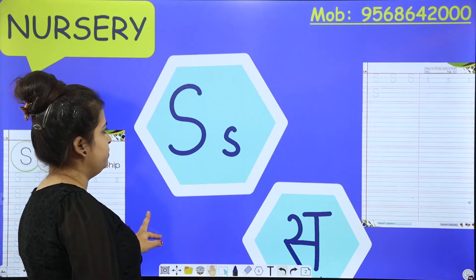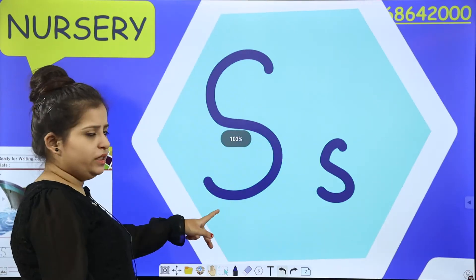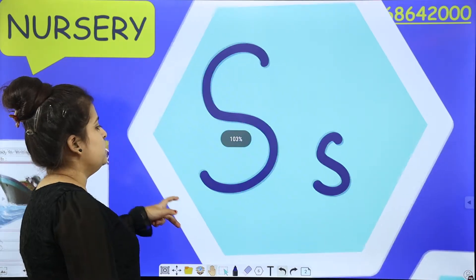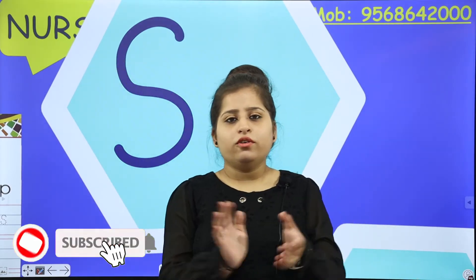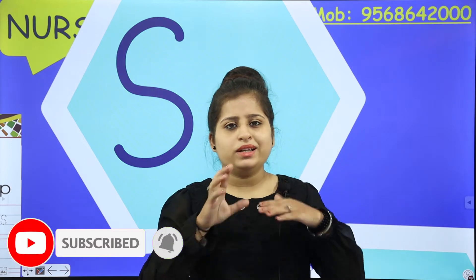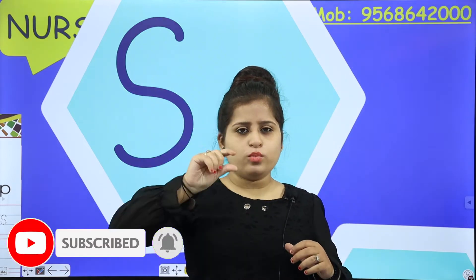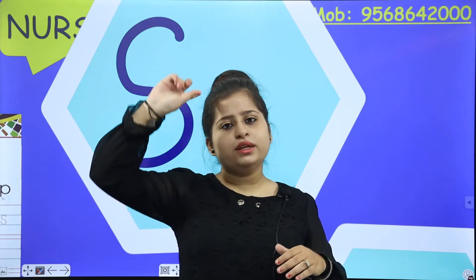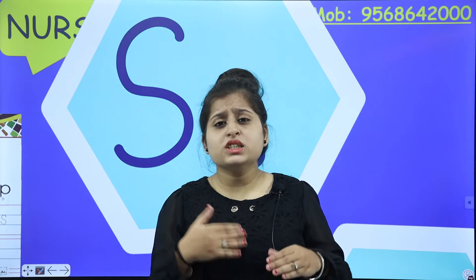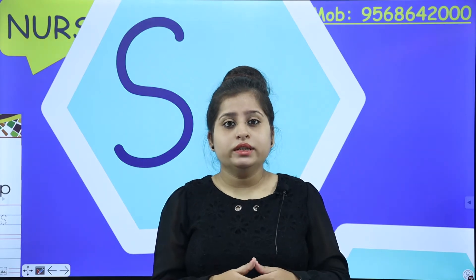Alphabet S — uppercase S we have learned, and lowercase S we have not done yet. Okay, the formations are the same, but the difference is big and small. We will make it in two blue lines, and we will make it starting from the red line to the blue line.